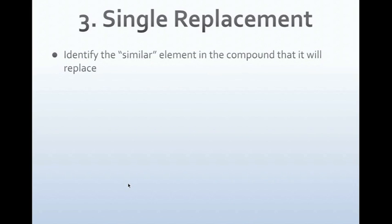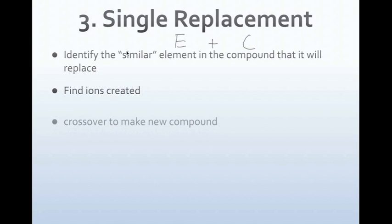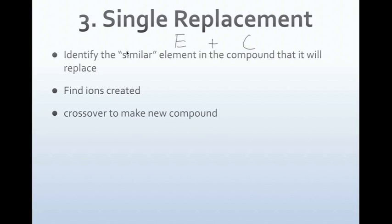In a single replacement reaction, there's usually an element in the reactants and in the products. If we see an element and a compound in the reactants, we know it's a single replacement reaction. The similar elements in the compound will switch with each other. We find the ions that are created and crisscross to make the new compound.